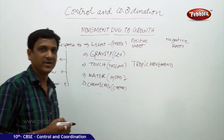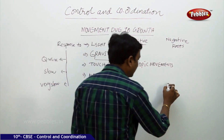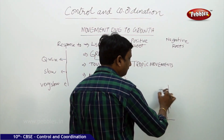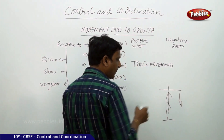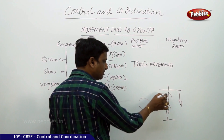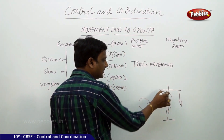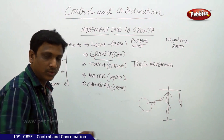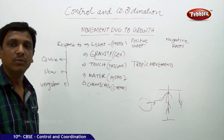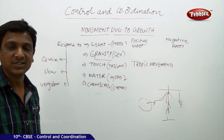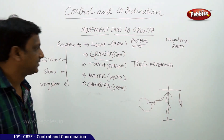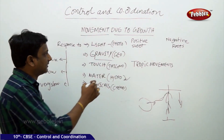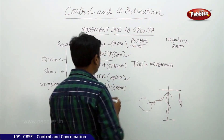Roots also grow towards water. The roots of plants and trees move underground, and their movement is directed towards a source of water. So this is called hydrotropism. These are three familiar and well-known tropisms — phototropism, geotropism, and hydrotropism.